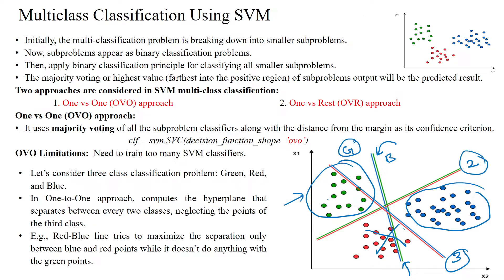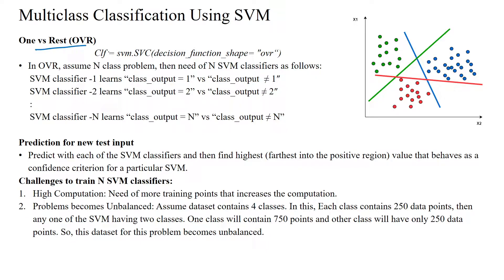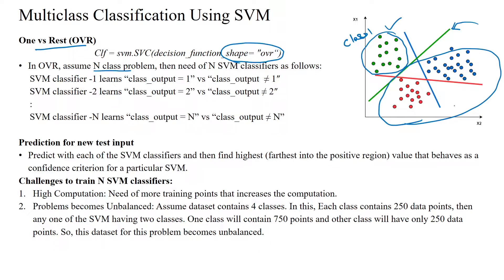For every two classes, we use one separate classifier — that is the limitation of OVO. Next is the OVR approach, where the decision function shape should be represented as OVR. It also has n number of sub-problems. In each sub-problem, it takes one dataset. For example, if you take the green color dataset, the green color dataset is classified by this hyperplane. The green color dataset will be class 1, and the entire remaining dataset will be assumed as class 2.